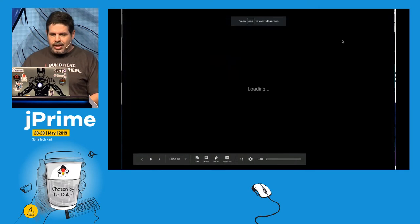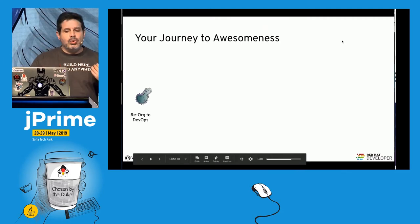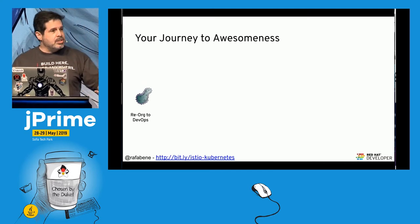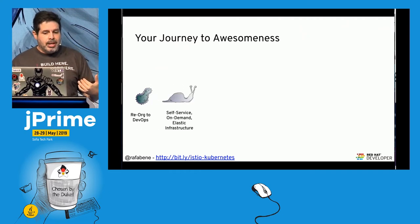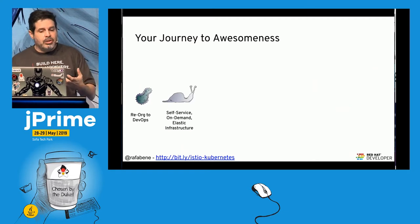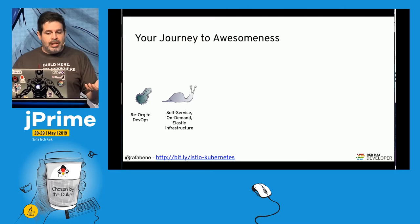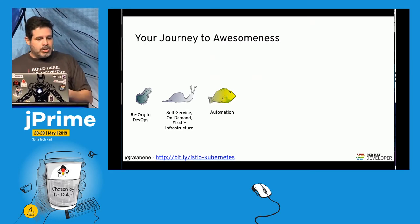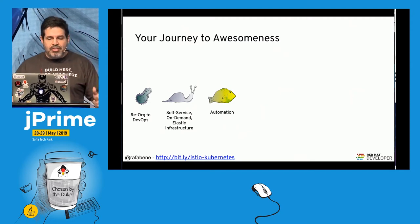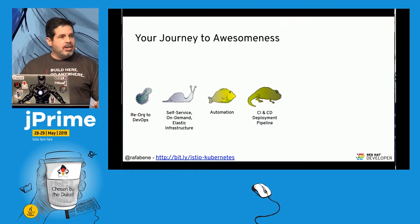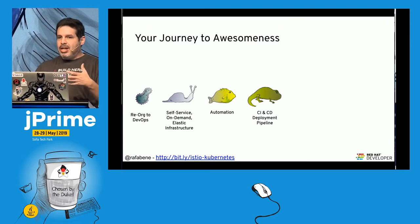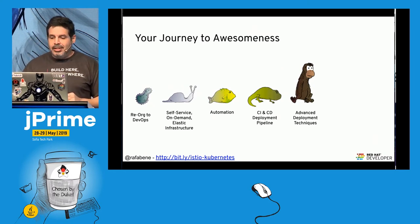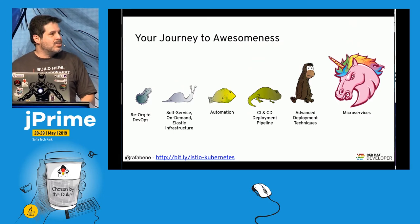When we decide to adopt microservices, there's a certain evolution process. First, we need to reorganize our team to adopt DevOps practices. Then we need a self-service, on-demand, elastic infrastructure. With elastic infrastructure and automation, we can have CI/CD deployment pipelines. With CI/CD pipelines, the next step is advanced deployment techniques — and then finally, who knows, you can become the next Silicon Valley unicorn.